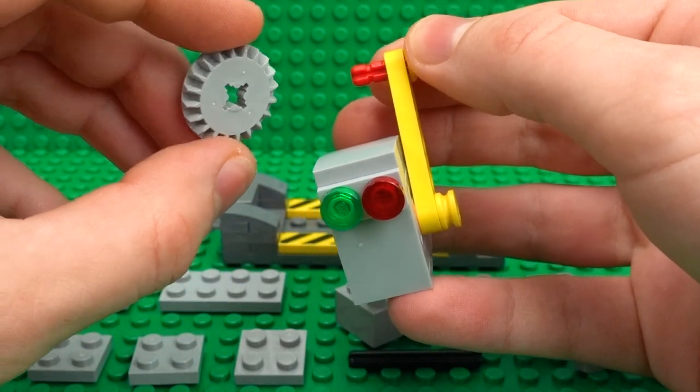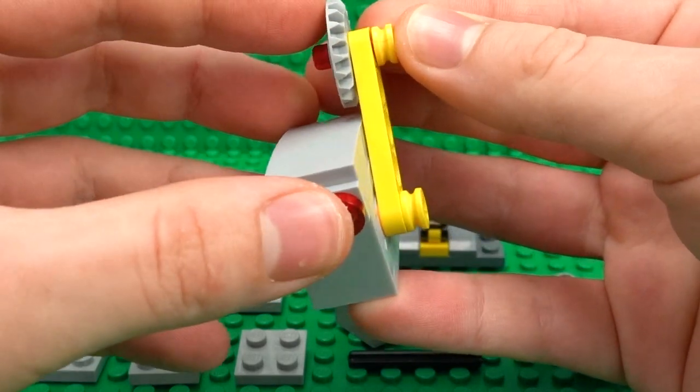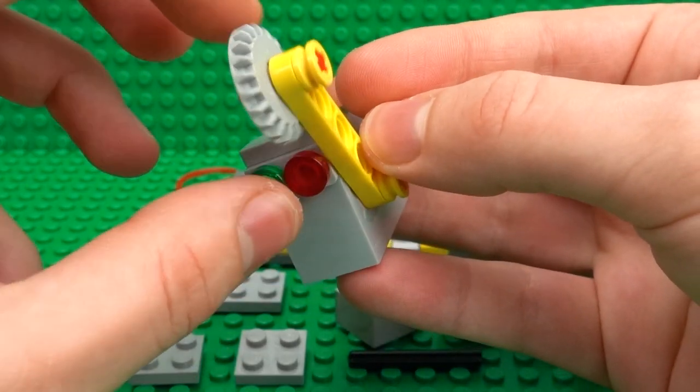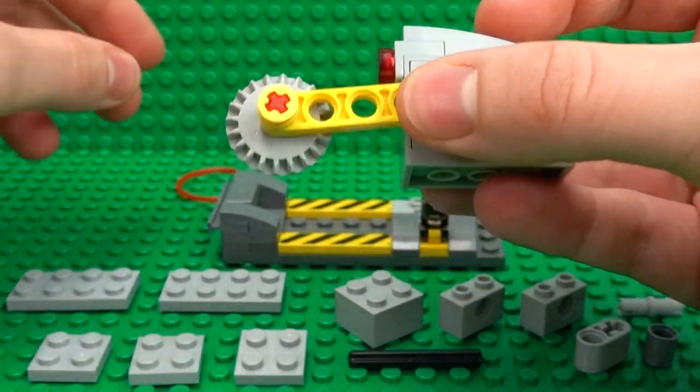Then slide a 1x2 axle through here and another half bush over on this side. And then you can take this half large bevel gear and just slide that all the way through until that hits the end. So that should spin around very loosely and we can join all of this together with a technic rubber band.